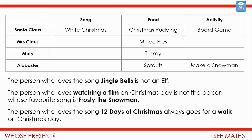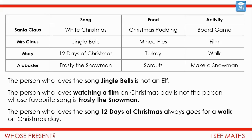Now I'm going to show you the next three clues. Which one or ones can you position next? The person who loves the song Jingle Bells is not an elf — the only person left who's not an elf is Mrs Claus, because we know Santa's favourite song. So hers must be Jingle Bells. The person who loves the song 12 Days of Christmas always goes for a walk. There's only one person left where we don't know both their favourite song and favourite activity — and that is Mary, Sugarplum Mary. She loves the 12 Days of Christmas and going for a walk. That leaves watching a film and Frosty the Snowman — Alabaster's favourite song must be Frosty the Snowman, and watching a film is for Mrs Claus.